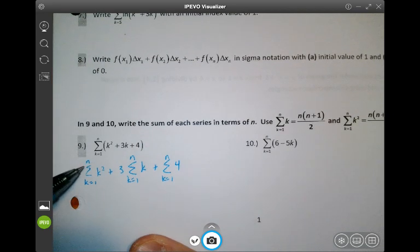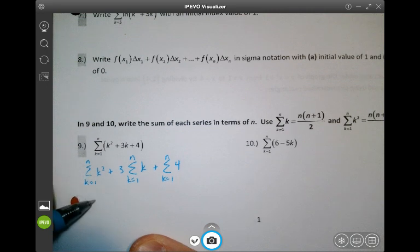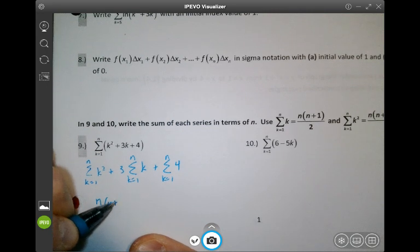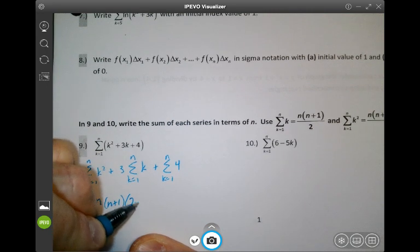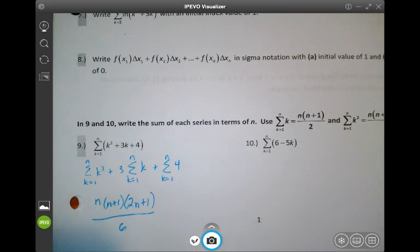So now the sum from k equals 1 to n of k squared - that is n times n plus 1 times 2n plus 1 all divided by 6.